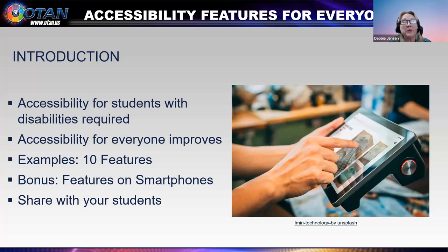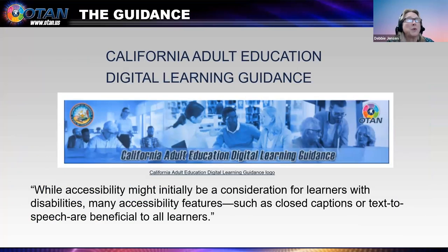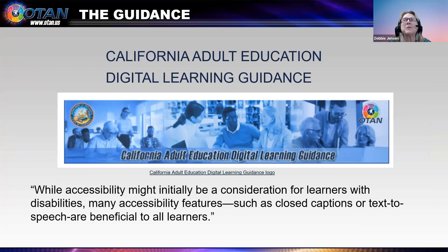We will look at why we should do this, 10 example features, and features on smartphones. Then I'll make suggestions for how to share these with your learners. Our best practices connection is found in the California Adult Education Digital Learning Guidance, Chapter 2. It says: accessibility measures the degree to which content, programs, or tools support and accommodate the needs and preferences of diverse learners.